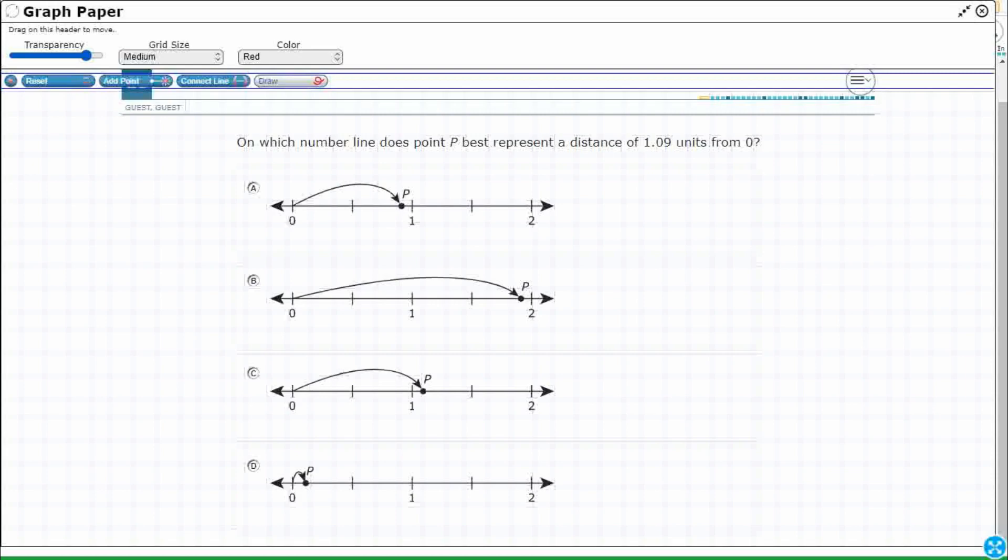So I think first, what's going to be important for us is to really look at the place value here. So 1.09. All right, so let's look at our place value.